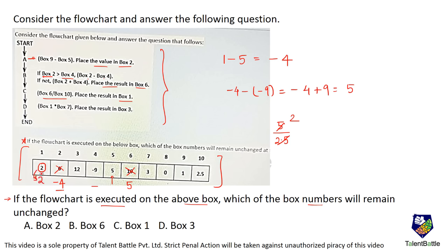Box 1 already has 2, and now it is again getting 2 — it is the same thing. So box 1 is the answer where the number will not change — it will remain unchanged. Next, box 1 multiplied by box 7: box 1 is 2 and box 7 is 3, so 2 times 3 is 6. Put 6 in box 3. Only box 1 remains unchanged.